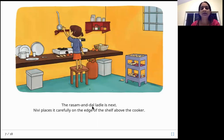The rasam and dal ladle is next. Nivi places it carefully on the edge of the shelf above the cooker. Next, she's starting to arrange other things. A ladle is like a huge spoon, hemispherical part at the end, which is used for serving rasam or sambar or soup, anything which is a liquid. That ladle, she puts it on the shelf, which is just above the cooker.